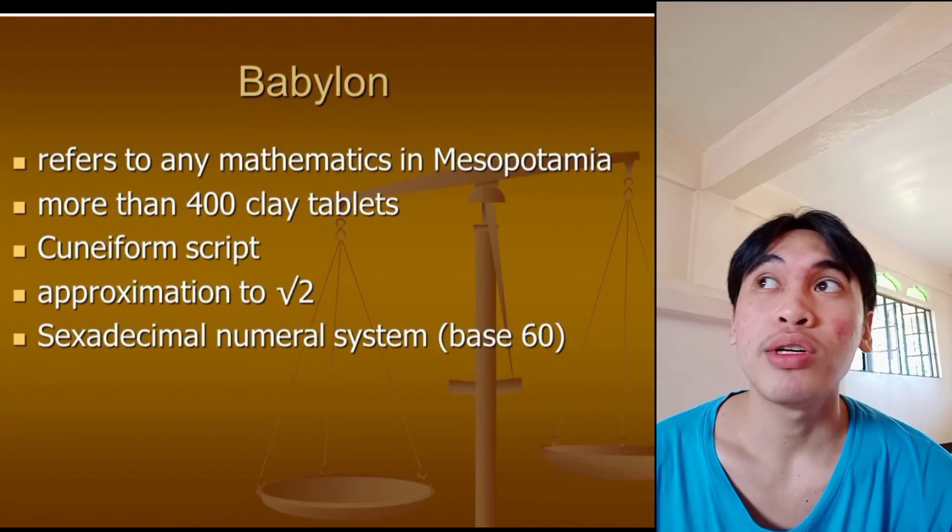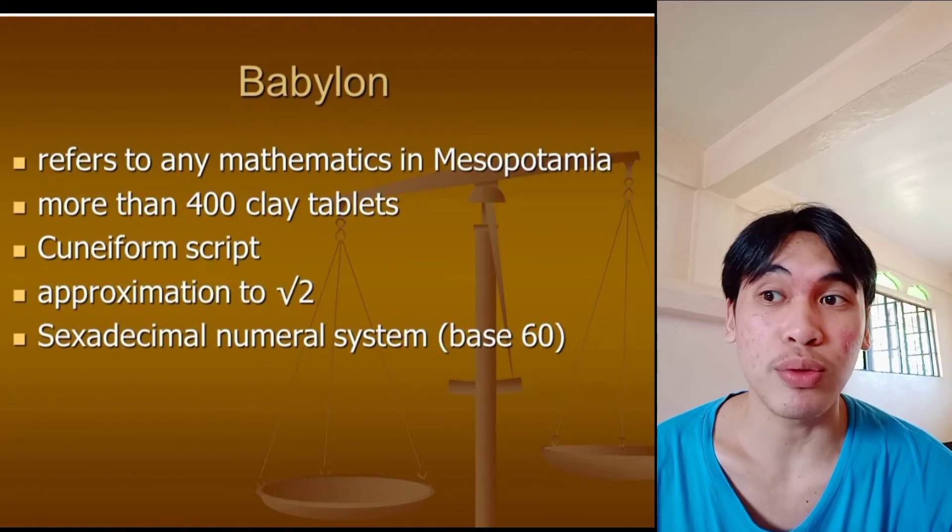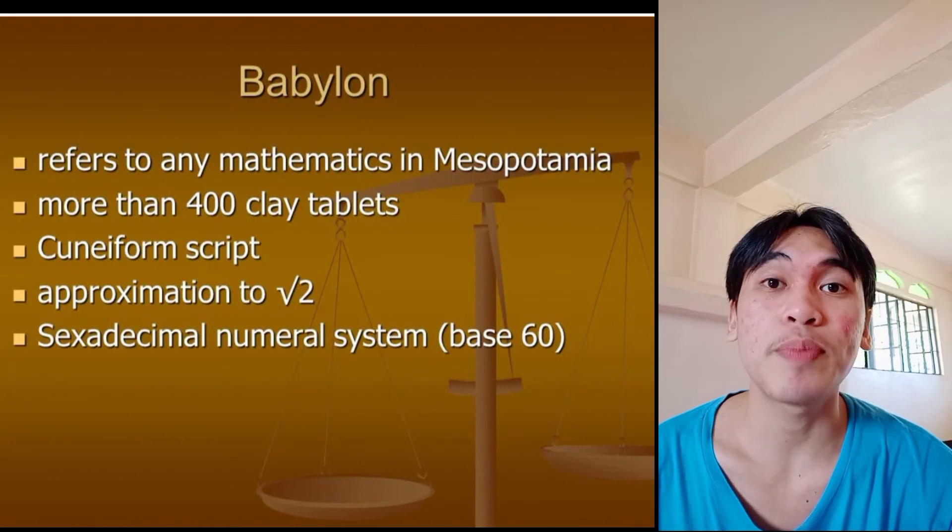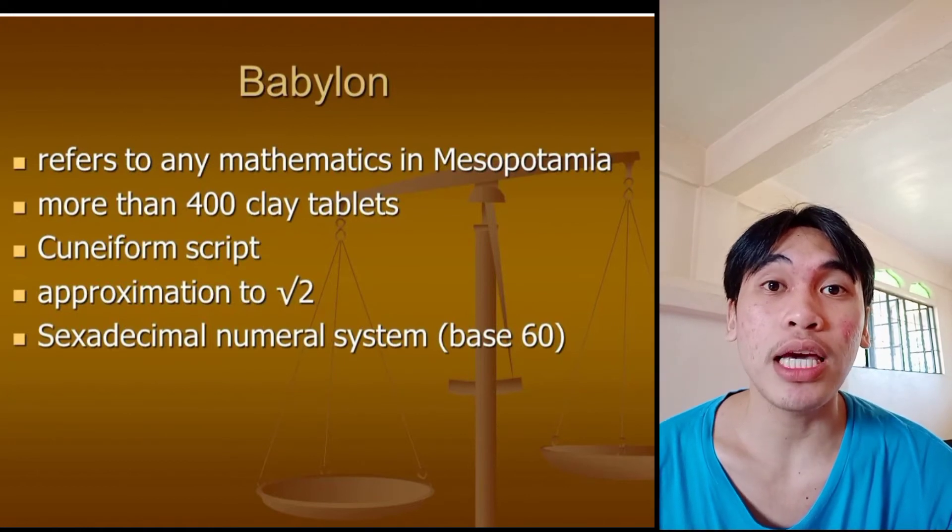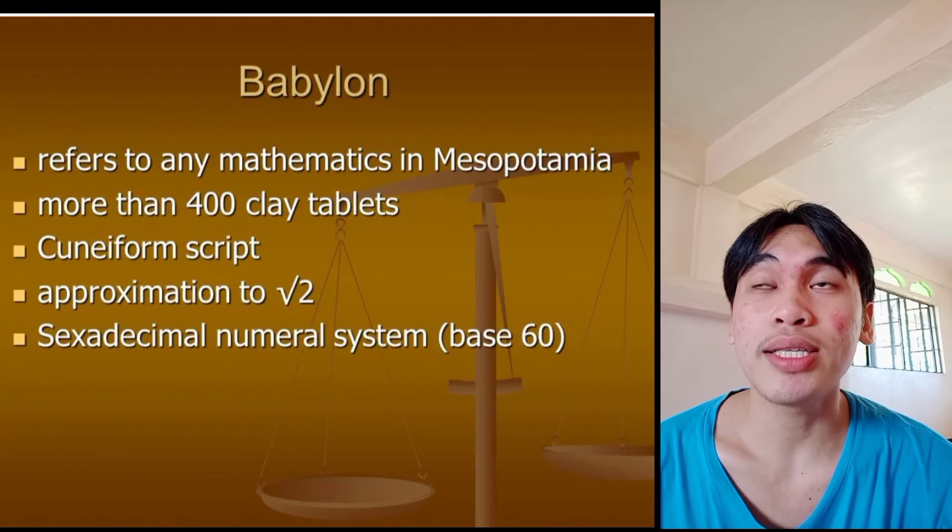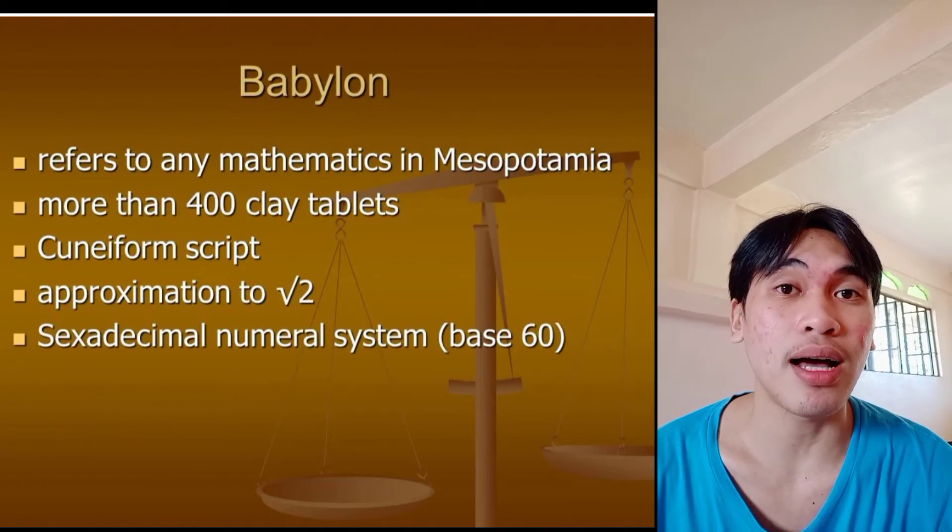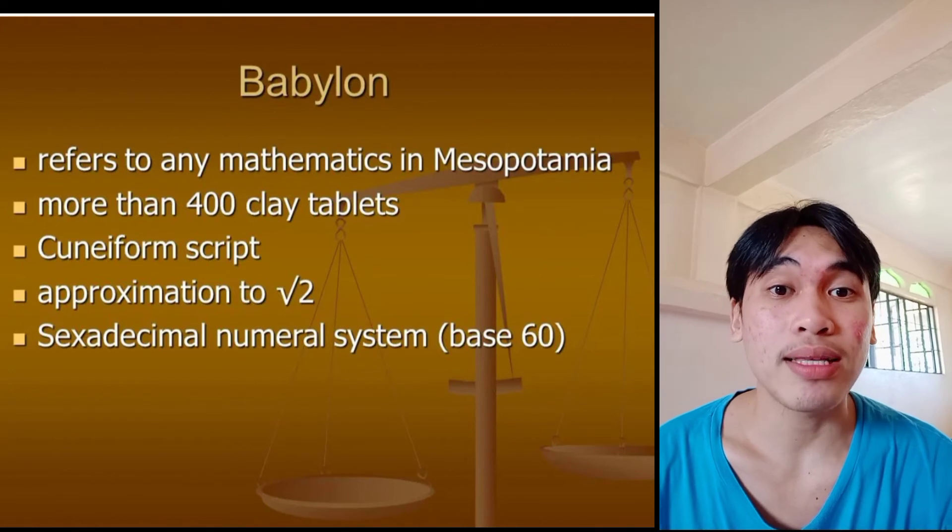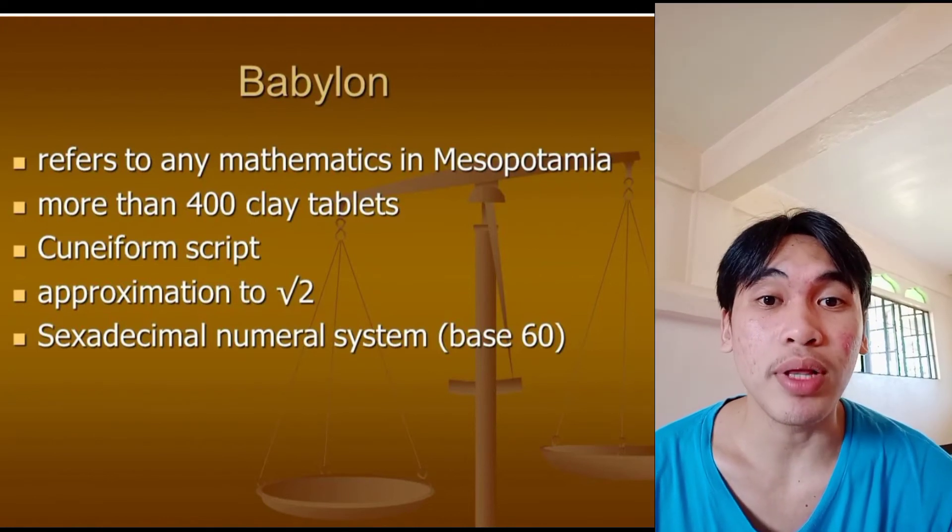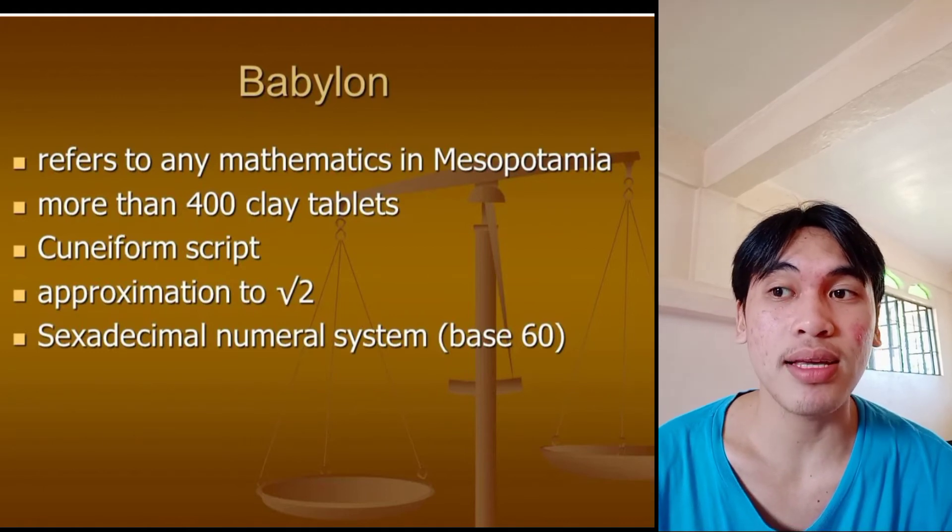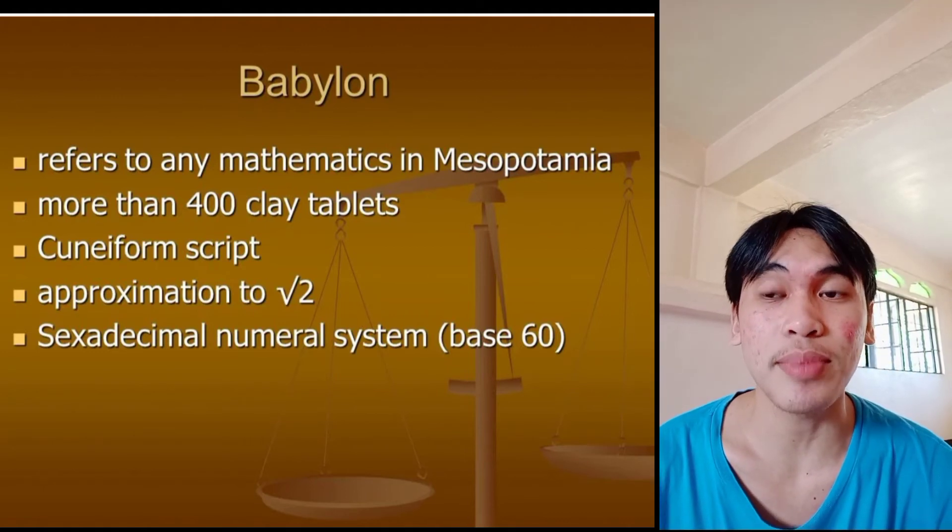Cuneiform script. Approximation of square root of 2. It is a sexadecimal numerical system. It's base 60. In ancient Egypt, we talked about the not-systematical, but predictable. But here in Babylon, they are using a systematical base 60. It is called the sexadecimal numerical system.